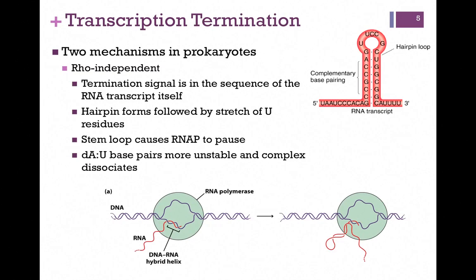What about the process of termination? There are two mechanisms in prokaryotic systems. One is rho-independent — that is, independent of any other factor. The termination signal is actually in the sequence of the RNA transcript itself. A hairpin or stem-loop structure forms that is followed by a stretch of U residues, and that's pictured at the top of the screen here. The stem is a region of complementary intramolecular base pairing within the molecule, and the loop, or hairpin portion, is the region that is not base paired.